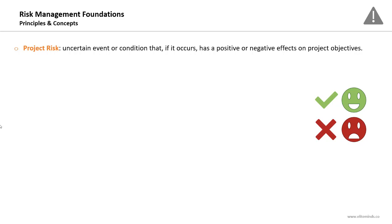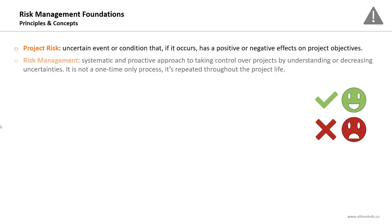In this lecture we will discuss a few principles, concepts, and terminologies when it comes to risk management, starting with project risk. As we defined earlier, it is an uncertain event or condition that if it occurs has a positive or negative effect on project objectives — so it's either positive as an opportunity, or negative as a threat. It might happen, it might not — it's an uncertain event.